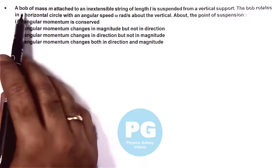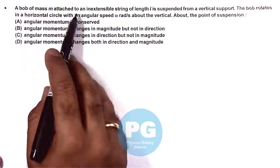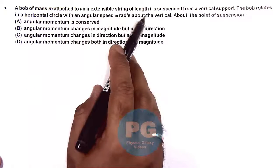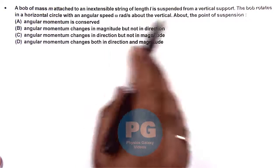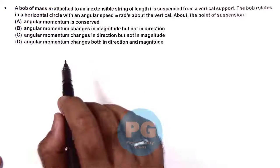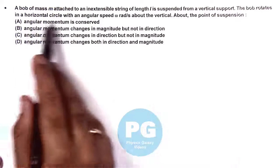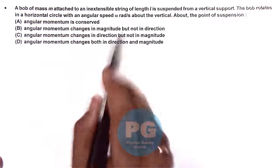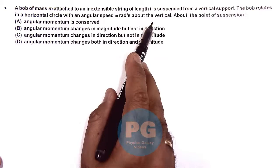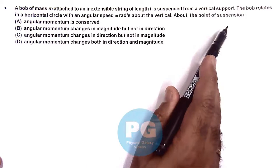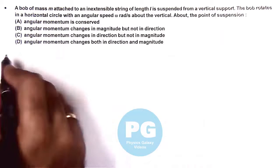In this question we are given that a bob of mass M is attached to an inextensible string of length L. It is suspended from a vertical support. The bob rotates in a horizontal circle with an angular speed omega radians per second about the vertical. About the point of suspension, we need to comment on its angular momentum.